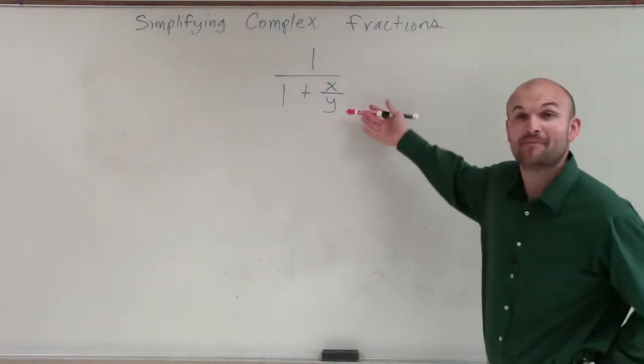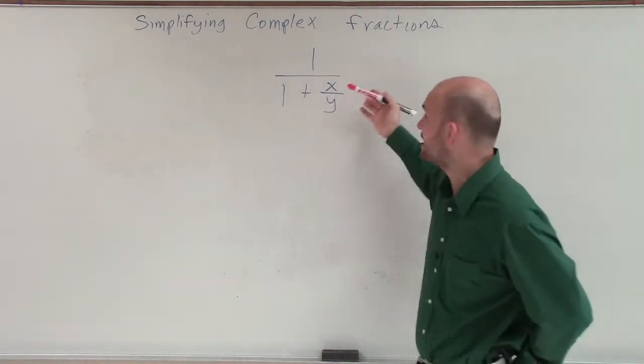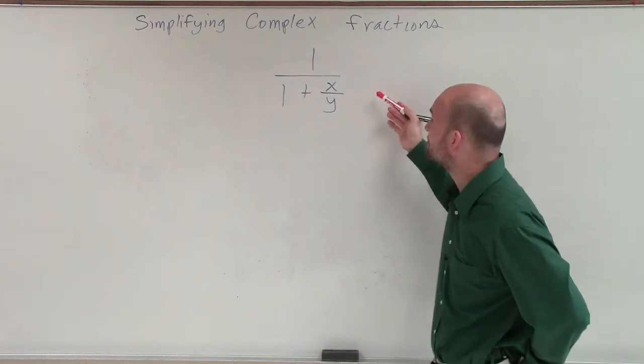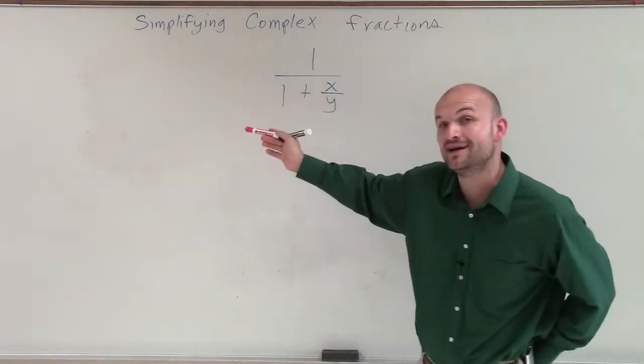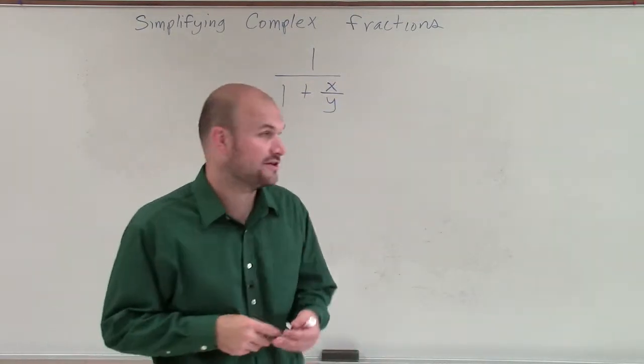Because we see if we just multiply by the reciprocal of x over y, and we have y over x, then we have to apply distributive property. So we're going to have to multiply that y over x times our 1 as well. And therefore, we're going to keep a fraction inside of there.